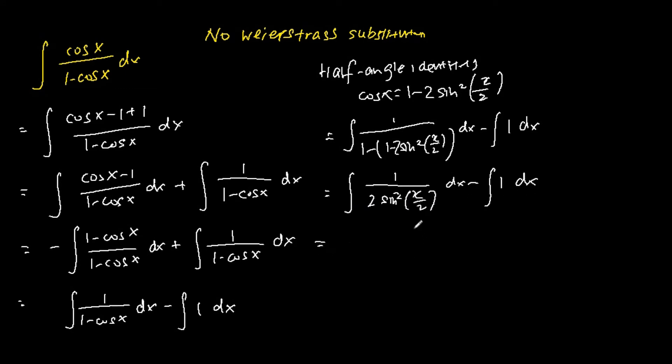So for the first term, the integral of 1 over 2 sine square x over 2 is the same as the integral of 1 over 2 cosecant square bracket x over 2. And after which we can perform the integration.